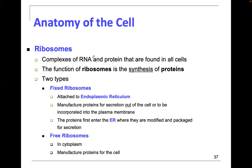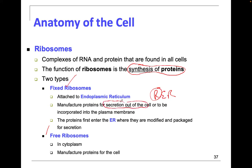Ribosomes are complexes of RNA and protein found in all cells. Their function is the synthesis of proteins — protein synthesis. There are two types: fixed ribosomes and free ribosomes. When ribosomes are attached to the endoplasmic reticulum, we refer to that as the rough ER, because the ribosomes give it a very grainy, rough appearance.